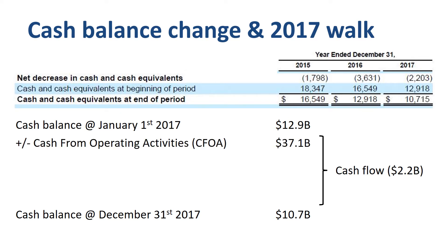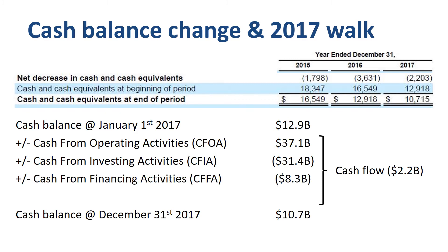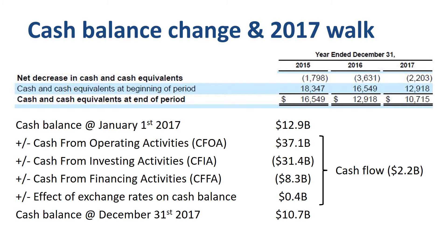Cash from operating activities was an impressive $37.1 billion cash inflow. Cash from investing activities was an outflow of $31.4 billion. Cash from financing activities was an outflow of $8.3 billion, and the effect of exchange rates on the cash balance was a positive $400 million. The next level of analysis is: what is in each of these cash flow categories?